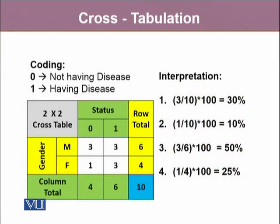Moving further, let's assign codes. Since status is a qualitative variable, as we discussed in previous modules, the categories of a qualitative variable can carry specific numeric codes. However, having these numeric codes does not necessarily mean that status is now a quantitative variable — these are just codes. They do not make these variables numeric. They will still be a qualitative variable.